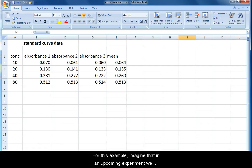For this example, imagine that in an upcoming experiment we will be measuring the changes in substance A's concentration using a spectrophotometer and we will use the absorbance to calculate the actual concentration. To do this we need to first create a standard curve that relates known concentrations of A to the amount of light absorbed by A.